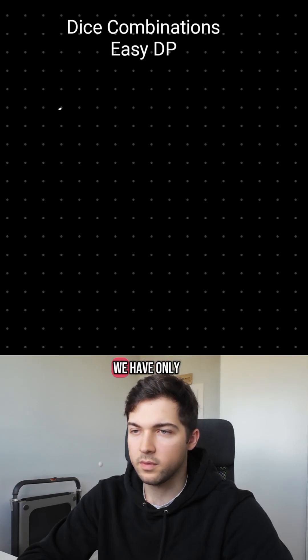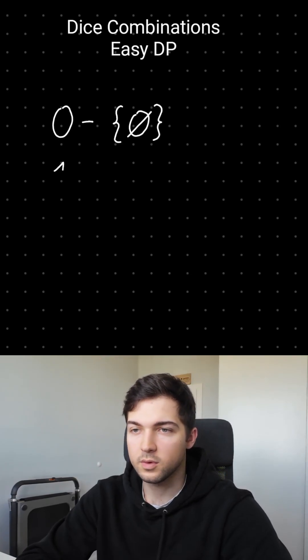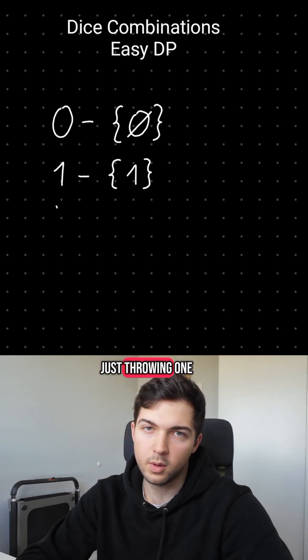For sum 0 we have only one way of getting it, not doing anything. For sum 1 we also have only one way of getting it, just throwing 1.